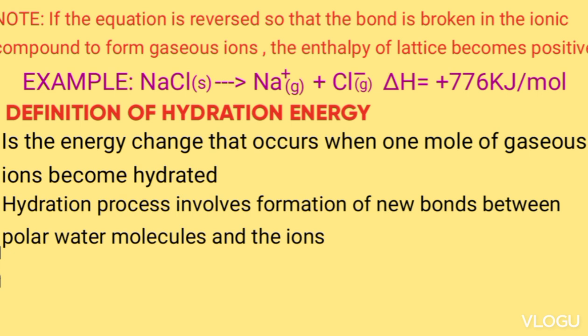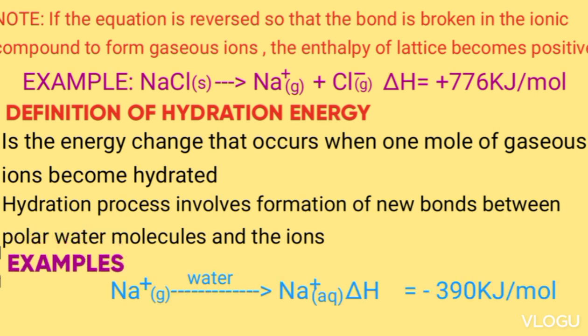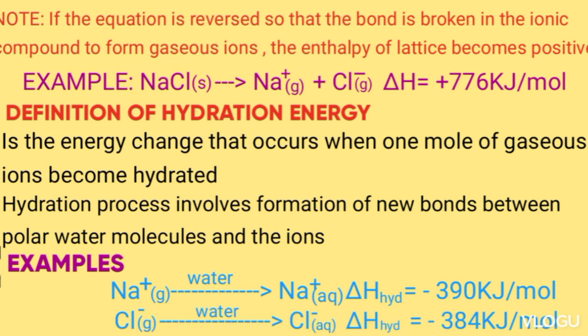Example: sodium ion (gas) + water → sodium ion (aqueous). ΔH hydration = negative 390 kilojoules per mole. Chloride ion (gas) + water → chloride ion (aqueous). ΔH hydration = negative 384 kilojoules per mole.